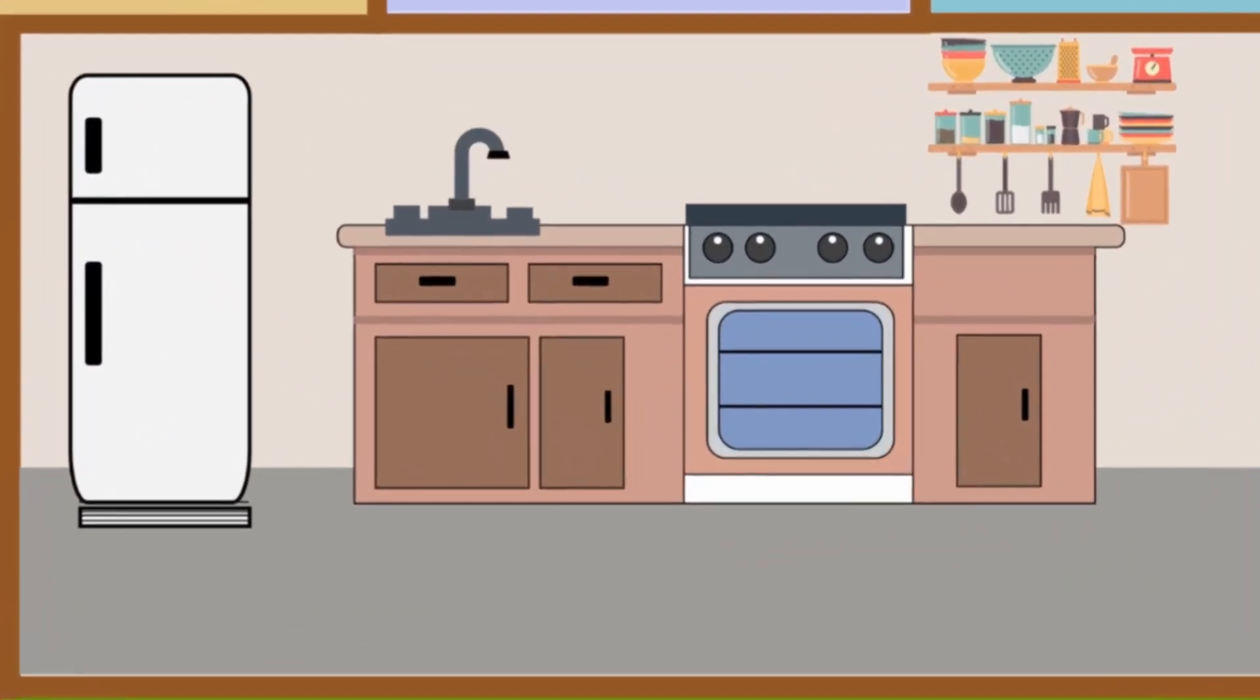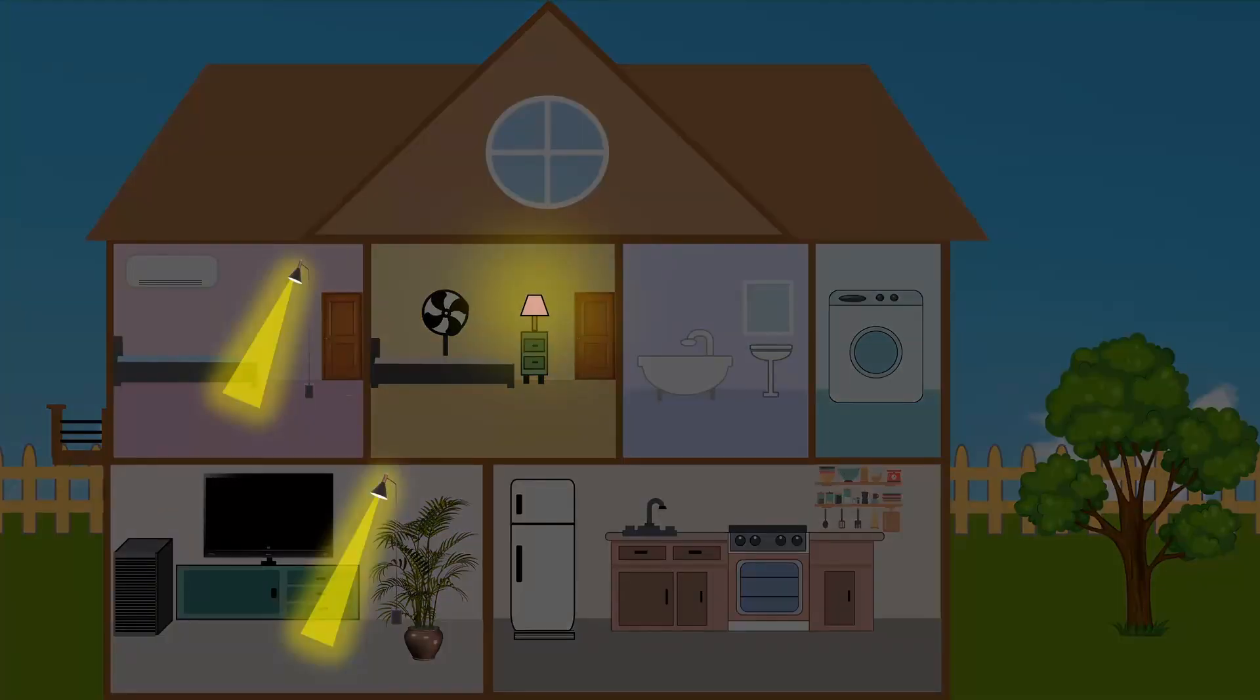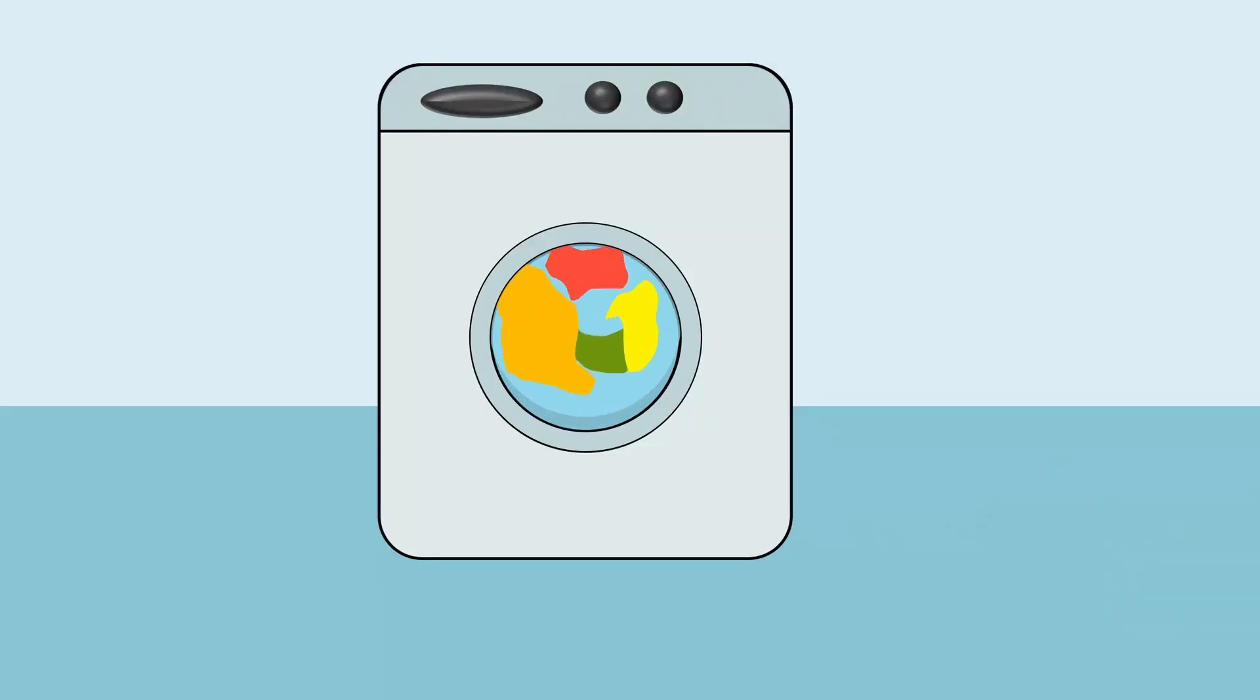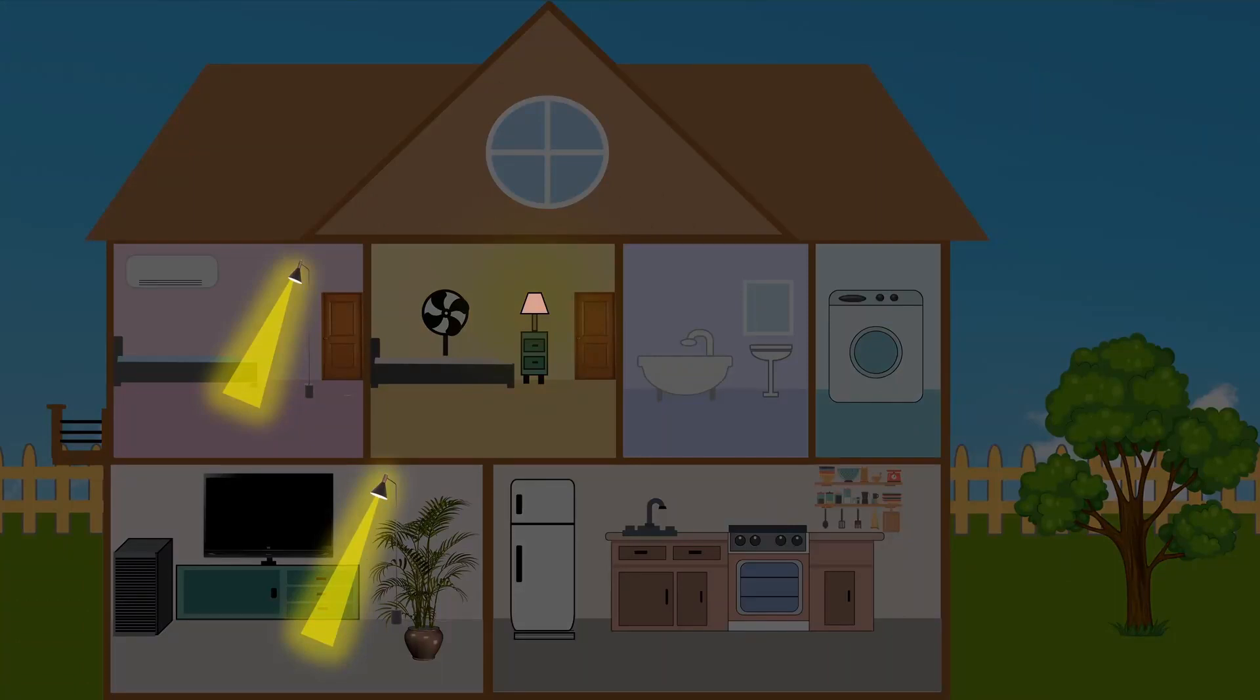Among these, appliances such as refrigerators run 24 by 7. We use lights mostly after sunset. Other appliances are switched on only when necessary. So if we consider a whole day, the amount of electricity we use in our home throughout the day is not constant.